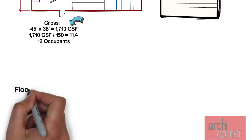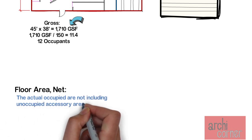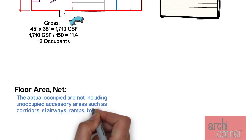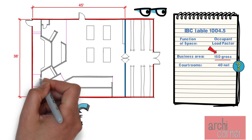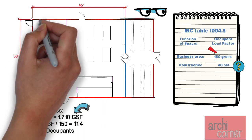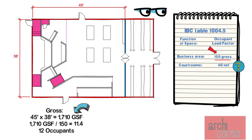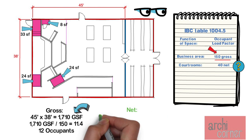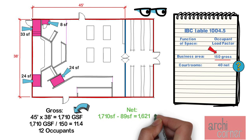The IBC definition in Chapter 2 for floor area net is: the actual occupied area, not including unoccupied accessory areas such as corridors, stairways, ramps, toilet rooms, mechanical rooms, and closets. In this courtroom we have two ramps, an area that could be considered a hallway or corridor, along with some stairs, and a small AV closet. All these areas add up to 89 square feet. Subtracting that from gross, we get a net square footage of 1,621 net square feet.